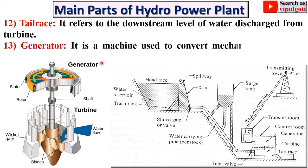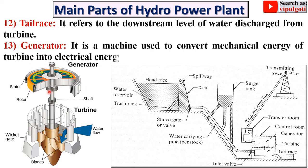Next: generator. Here you can see this one is the generator, and you can see that the generator is coupled with the turbine. It is a machine used to convert the mechanical energy of the turbine into electrical energy.